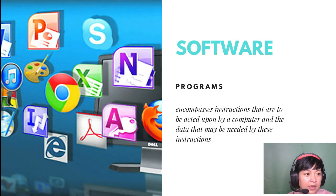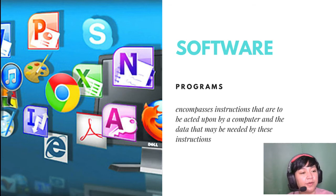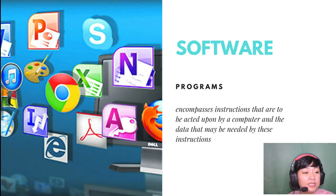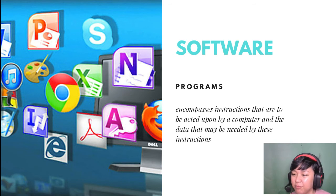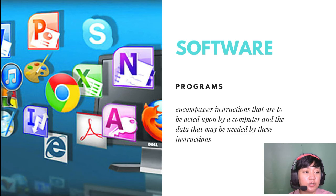Computer hardware, in itself, is unable to perform any useful task. It must be provided with detailed and unambiguous instructions indicating exactly what actions are to be taken. Software is a term used when referring to programs in general, and encompasses the instructions acted upon by a computer. Examples include Microsoft Office, web browsers, Spotify, Netflix, Photoshop, and Filmora.